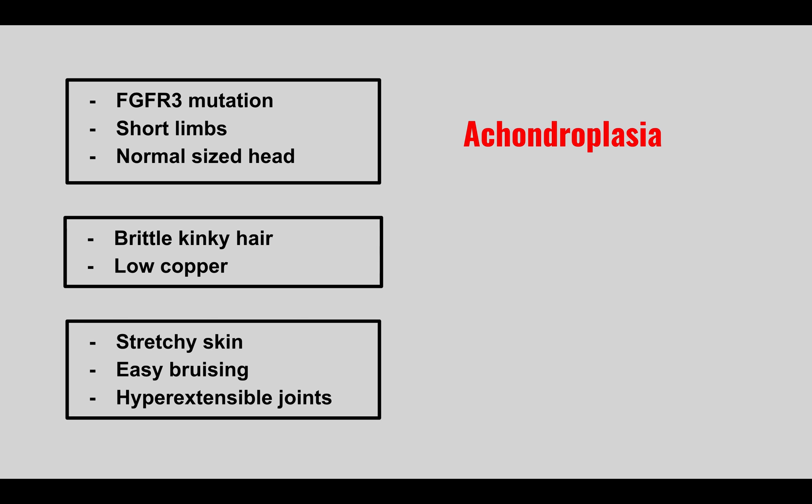The next condition is due to an FGFR3 mutation — the patient has short limbs but a normal-sized head. This is achondroplasia, a gain-of-function mutation of FGFR3, which normally allows lengthening of long bones. In this condition, patients will be little dwarfs.